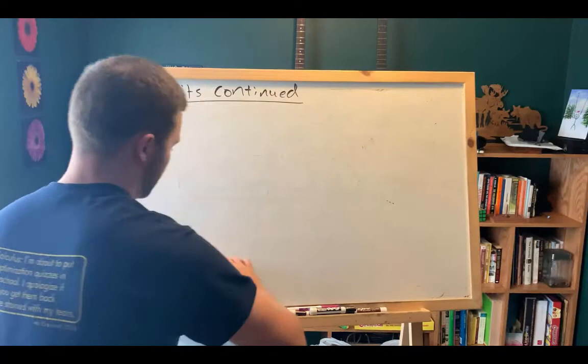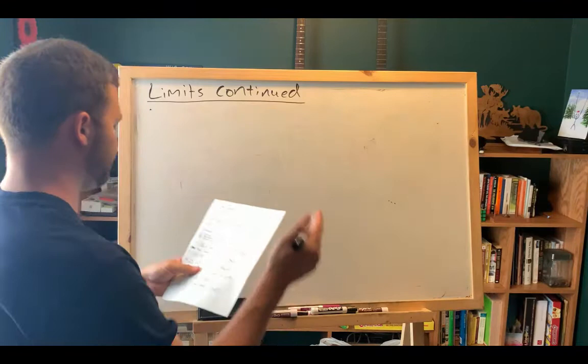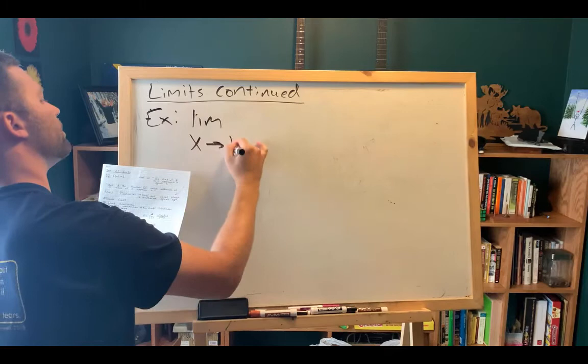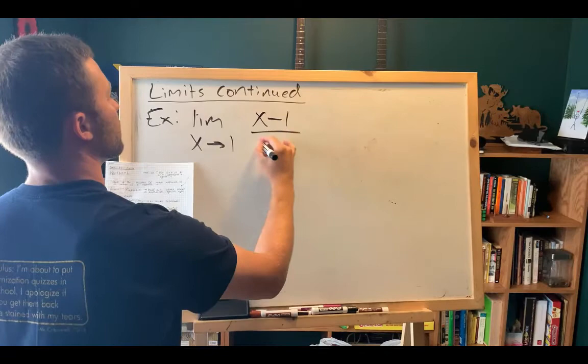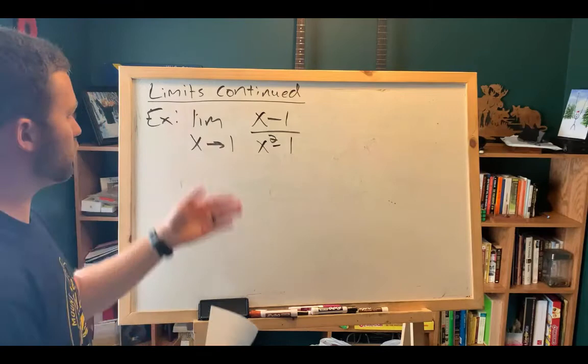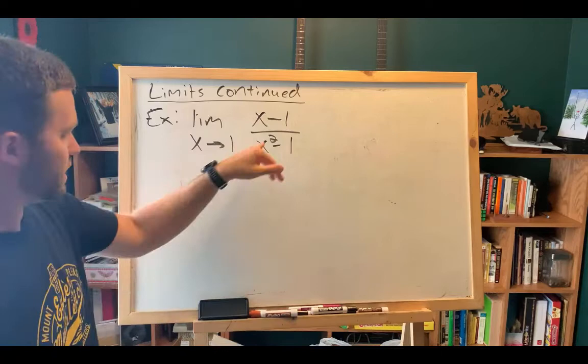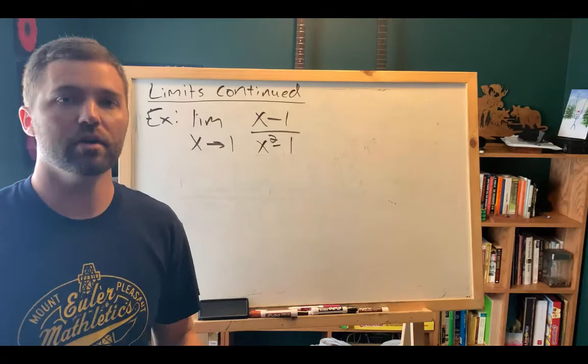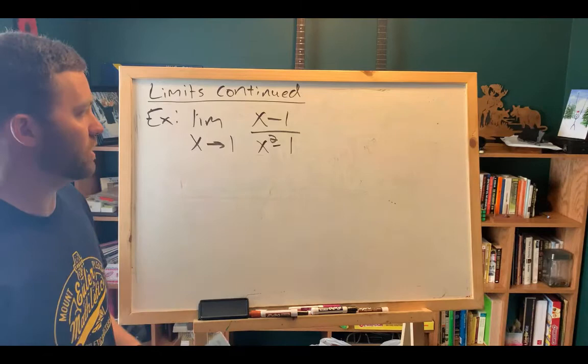So let's do a couple examples here. Let's look at limit as X approaches one of the function X minus one over X squared minus one. So step one is to try direct substitution. You plug in one. One minus one on top is zero. Zero in the numerator is not the worst thing ever. But we check the denominator, plug in one, and I get one minus one is zero. So I have a zero divided by zero situation. I can't divide by zero in the real number system. So I go to step two.